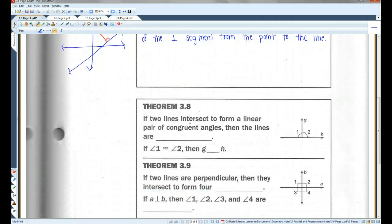Theorem 3.8. If two lines intersect to form a linear pair of congruent angles, then the lines are perpendicular. And this actually makes sense if you think about it. A linear pair, as you guys know, they're always going to be supplementary, which means they add up to 180. So, if these two angles have to add up to 180, and they're congruent,